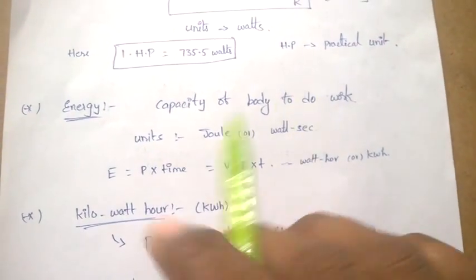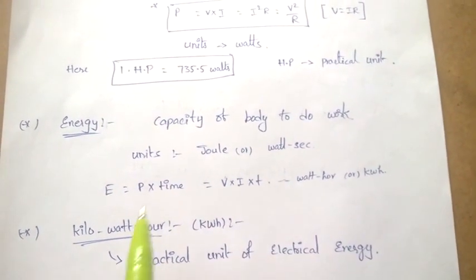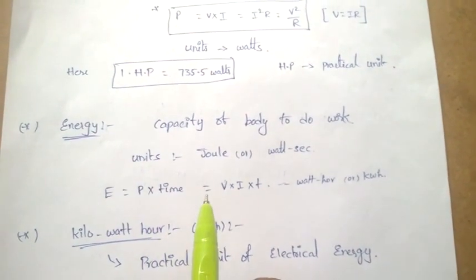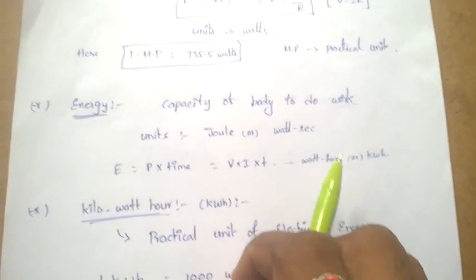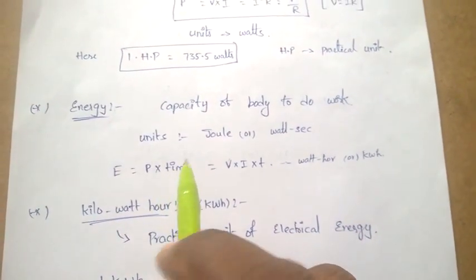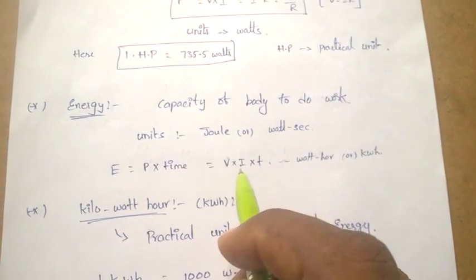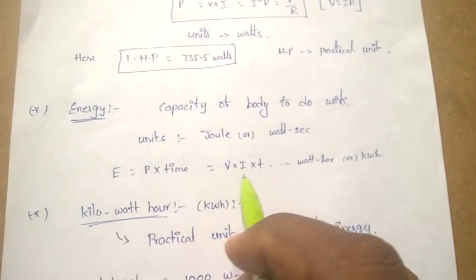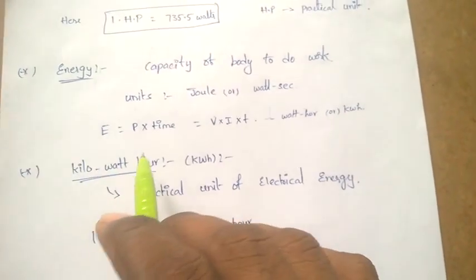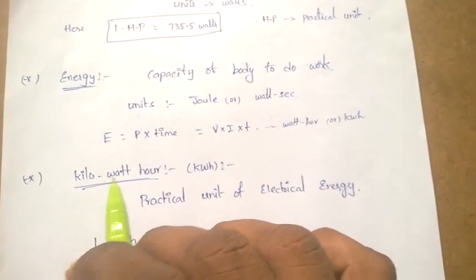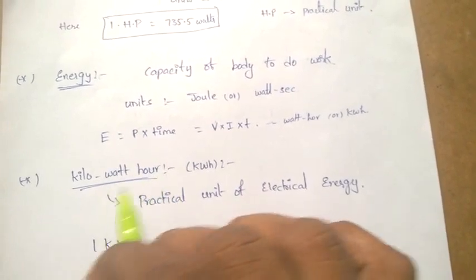Energy is the capacity of a body to do work. The units of energy are joules, watt-seconds, or kilowatt-hour. For electrical energy, energy equal to power into time. Since P equal to V into I, the energy equals V into I into T. The practical unit of electrical energy is kilowatt-hour.